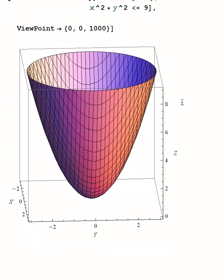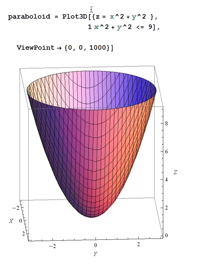OK, what if you want something a little more sophisticated? Just change the region in the xy plane, which is allowed to generate points on the surface. So, for instance, if I say that x squared plus y squared should be between 1 and 9,